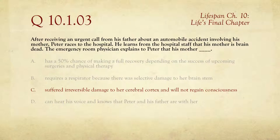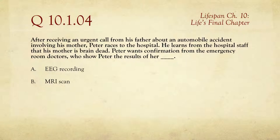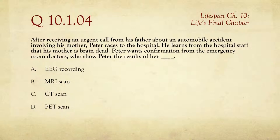There are a lot of kinds of brain damage that are not the same thing as brain dead. The next question follows up on that. Same scenario: Peter races to the hospital, his mother is brain dead. Peter wants confirmation from the emergency room doctors, who show Peter the results of what — her EEG recording, MRI scan, CT scan, or PET scan? EEG stands for electroencephalograph, MRI for magnetic resonance imaging, CT for computerized tomography, and PET for positron emission tomography. The one used to check for brain activity is the EEG — it's actually the simplest. It just looks for electrical activity on the brain. If there isn't any, then you're brain dead.